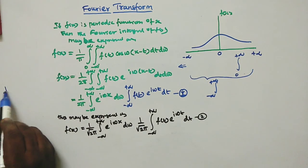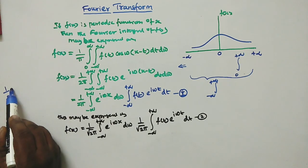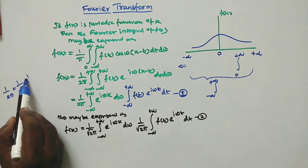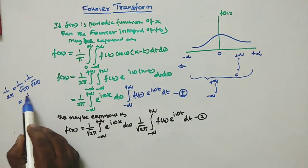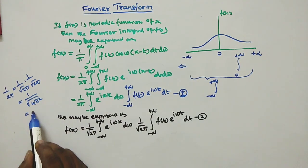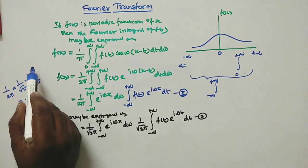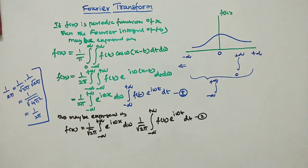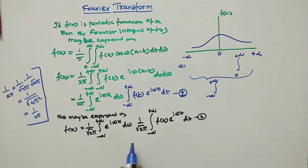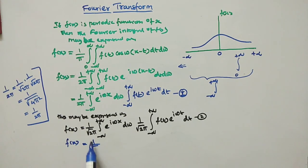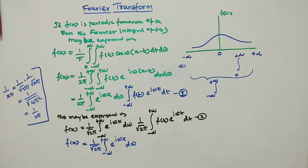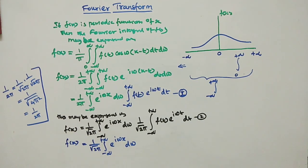Note this key point for your understanding: 1 by 2π is separated as 1 by √(2π) times 1 by √(2π). We can verify this: 1 by √(4π²) gives us 1 by 2π. No need to write this in the examination, just keep it in mind.